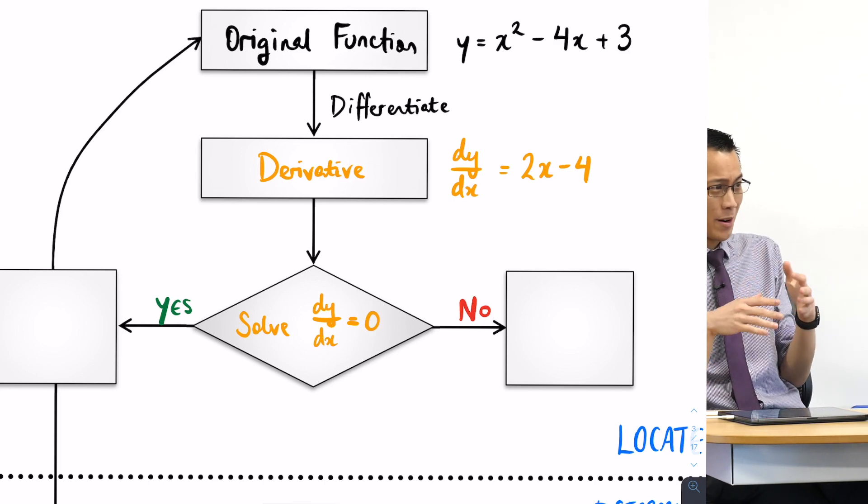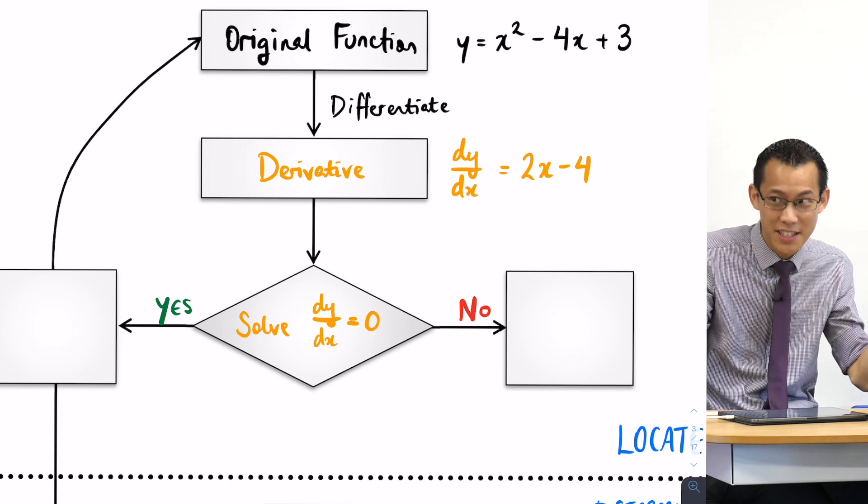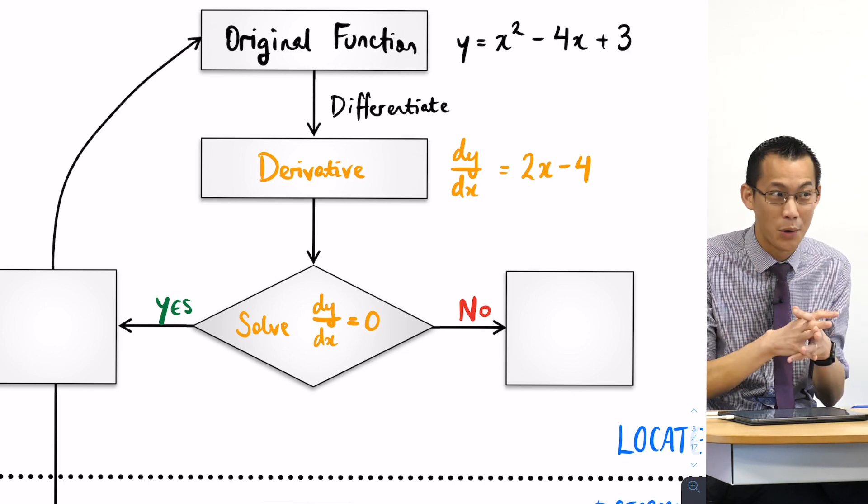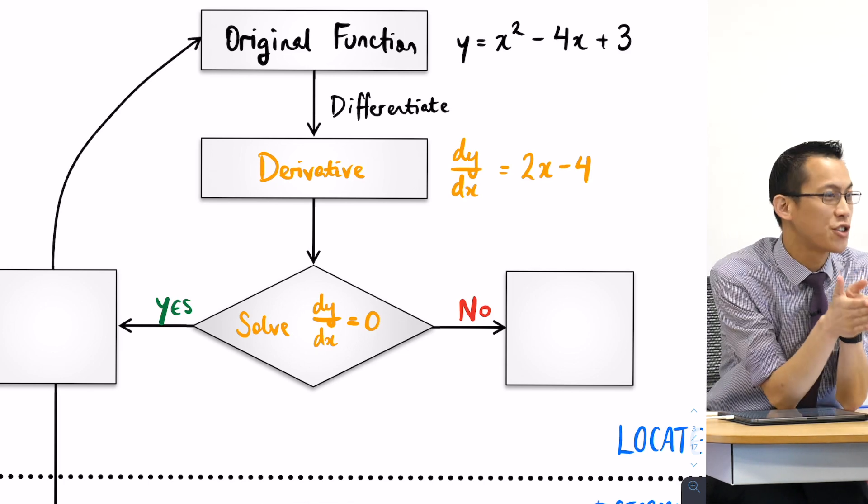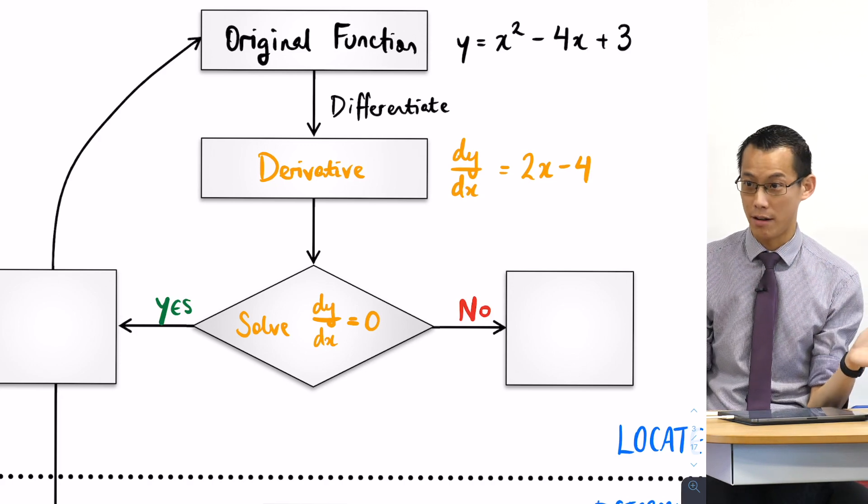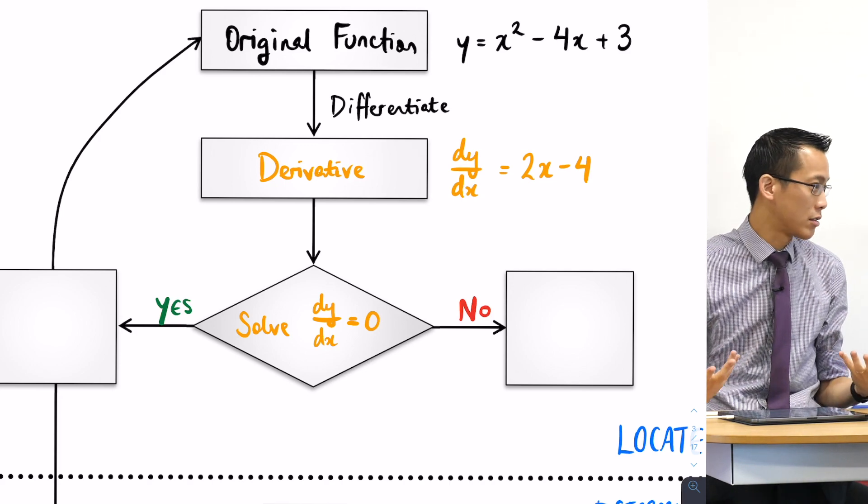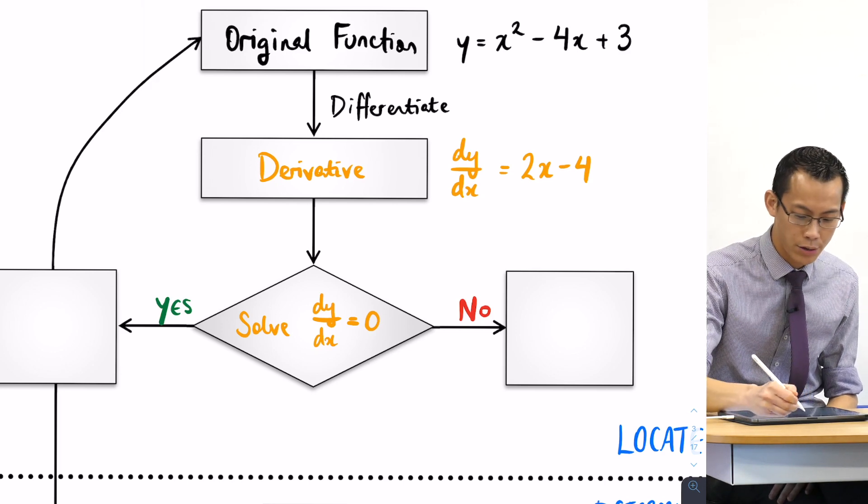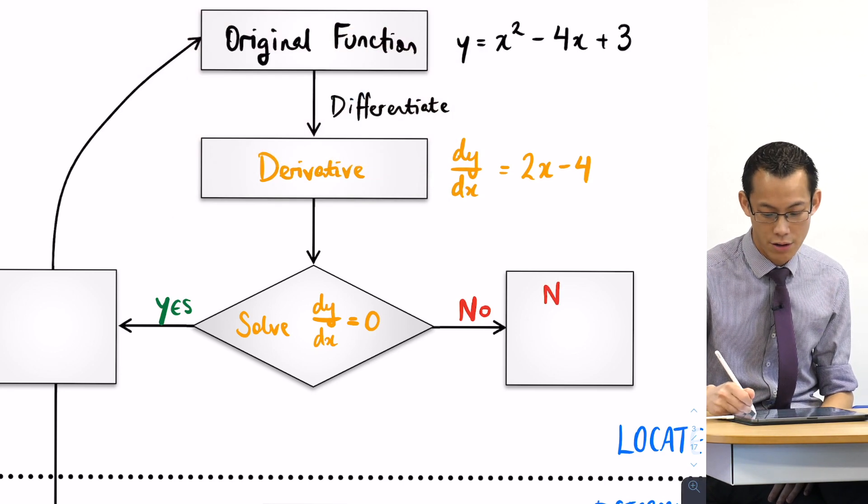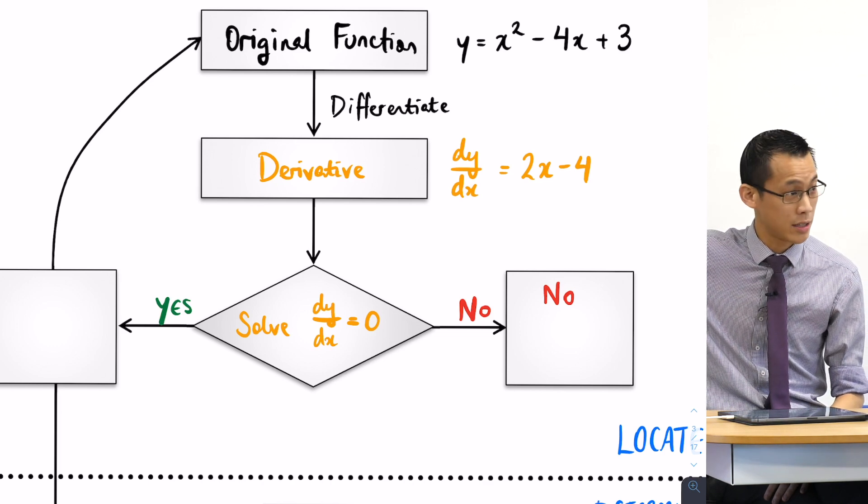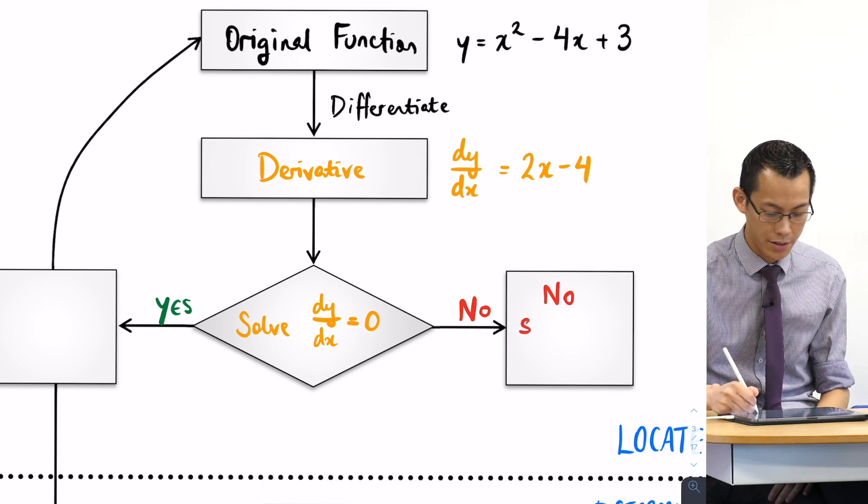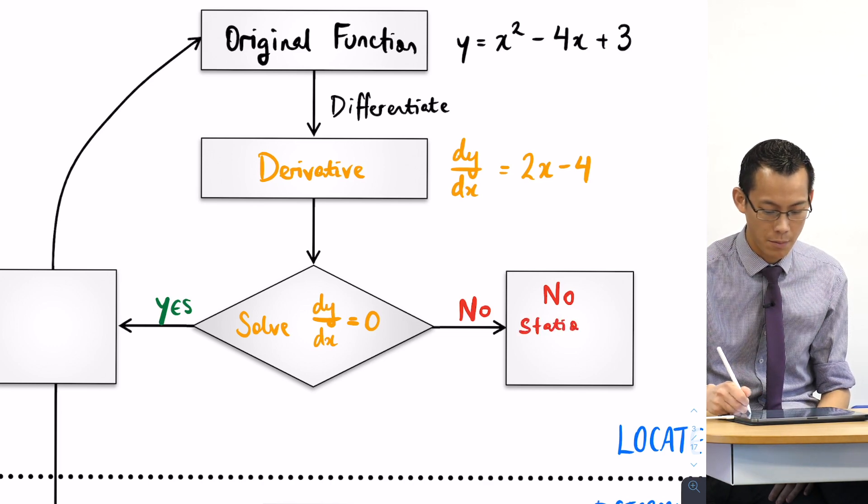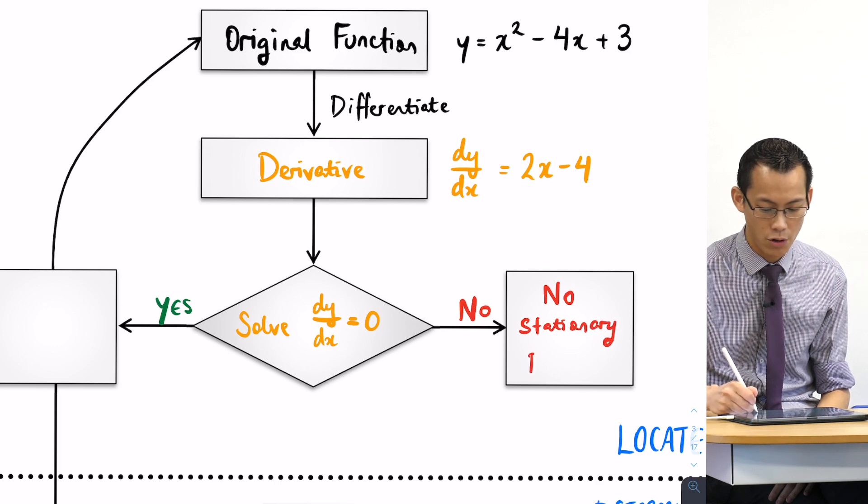Think carefully, we're in a COVID-19 situation. What kind of functions are really important to us right now? Exponential functions do not turn. Logarithmic functions do not turn. There's no stationary point of any kind. So therefore we conclude if there's no solution to dy/dx equals zero then there are no stationary points.